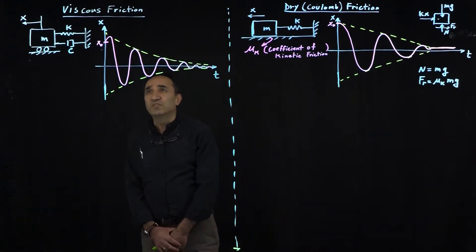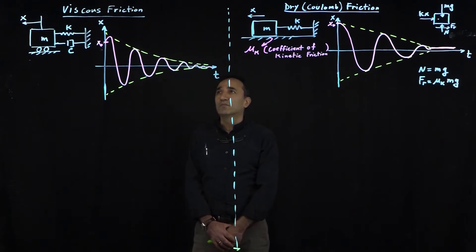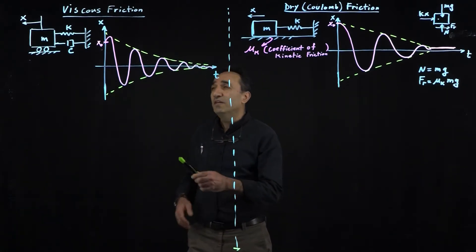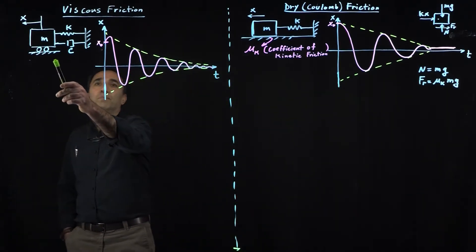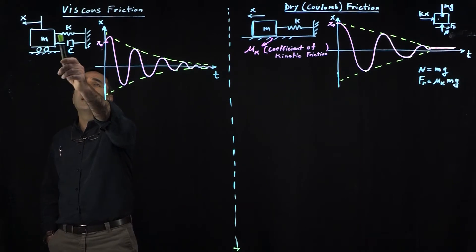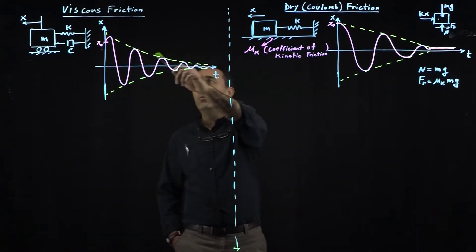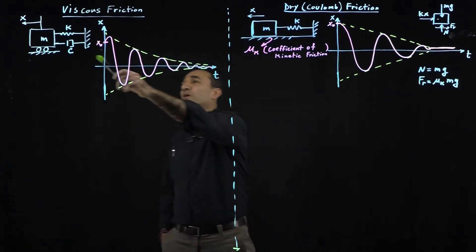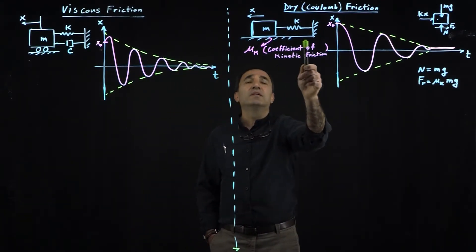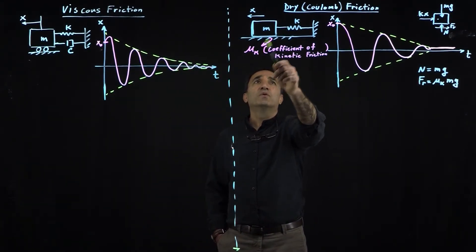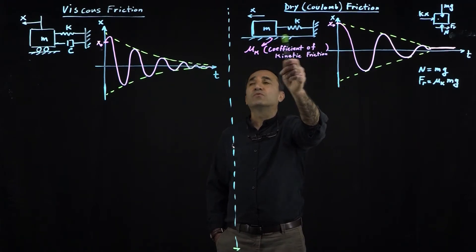I have two systems here. Some people have difficulty understanding the difference between them. I have here a typical mechanical system which consists of a mass, spring, and a damper. We have what we call a viscous damper, a dashpot. If you remove the dashpot and replace it by friction between the mass and the surface, you have what we call dry friction.